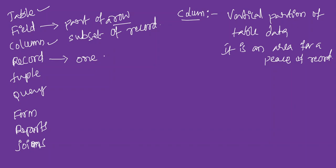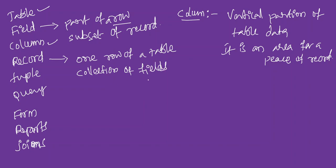One row of a table is called a record. A record is one row of a table, and it is a collection of columns related to that row.